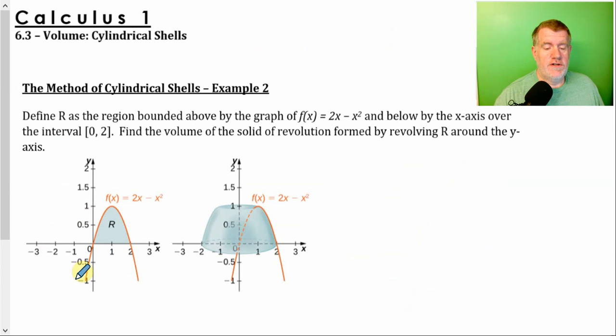And in a case like this one, the shell method is the only way to do it. If I'm going to rotate this around the y-axis, I couldn't do it as a rotation with a disk or a washer method, because the outer function and the inner function are the same graph. And if you subtract it from one another, you get zero. So this would be impossible to do unless we had the shell method.